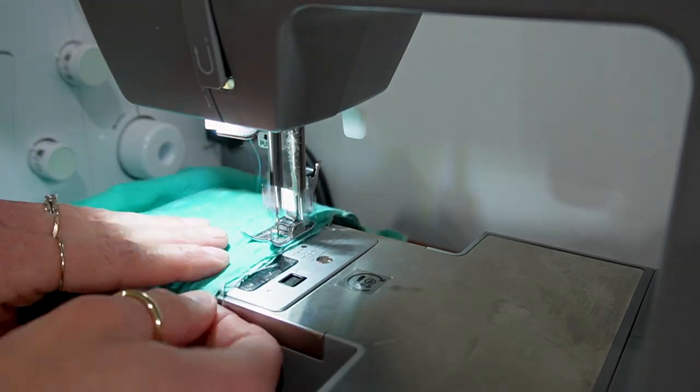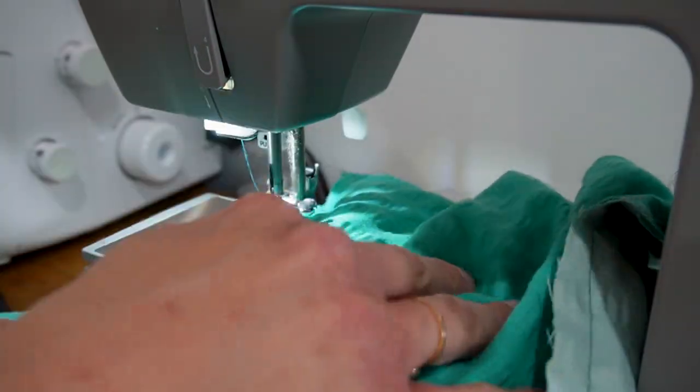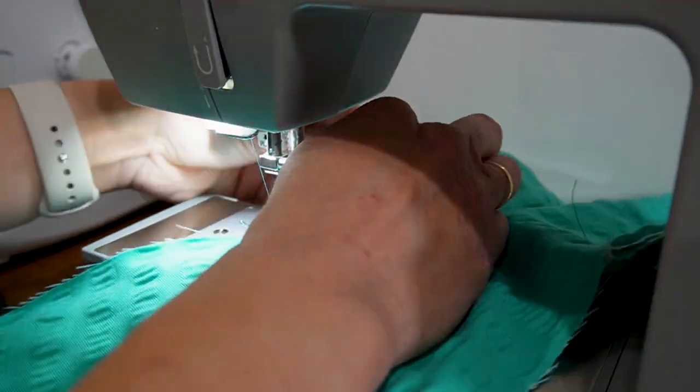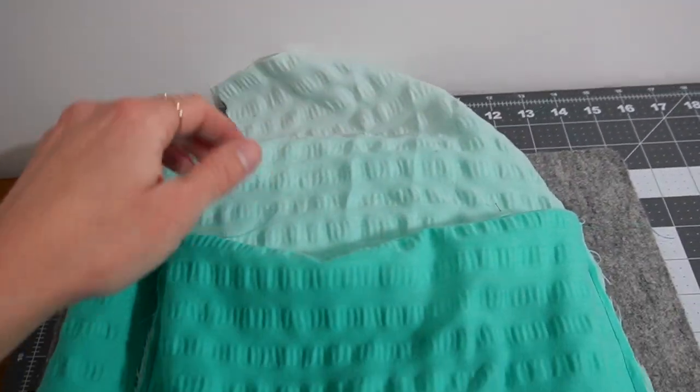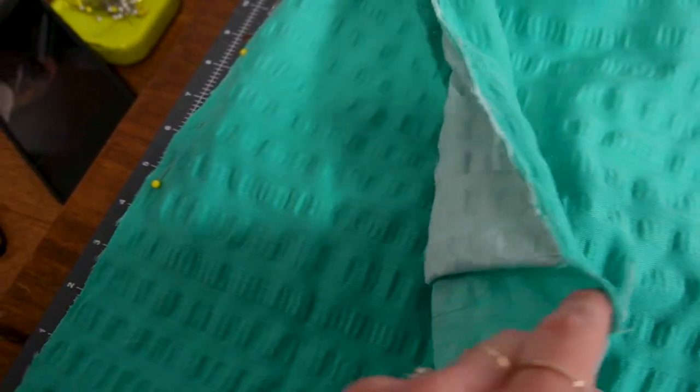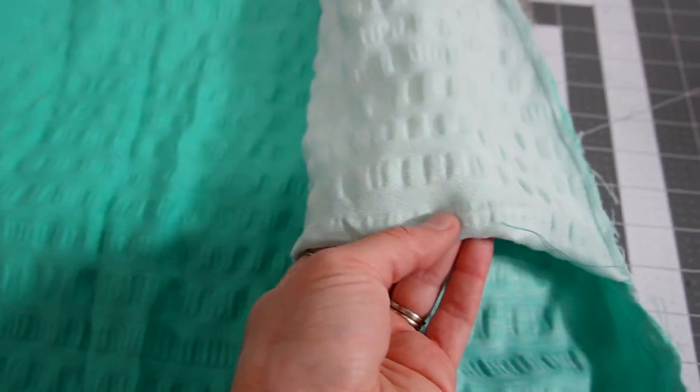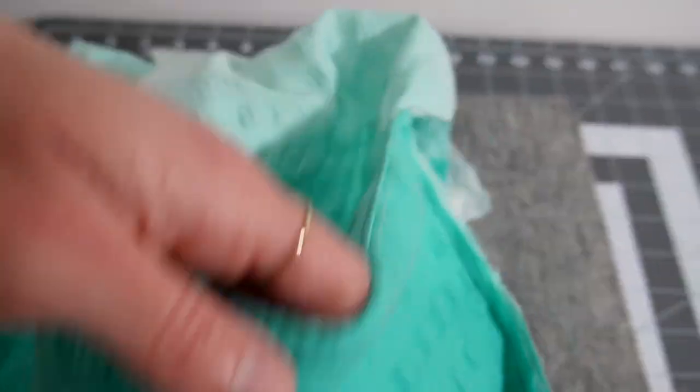Next step is to baste down all the sides of the pocket so that way it stays together and you're easily able to sew it together with the center front and the center back pieces that you'll be attaching it to. You can see our pocket is coming together nicely. This is what the inside looks like, and this is the outside. This is your pocket - how cool is that!